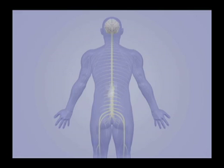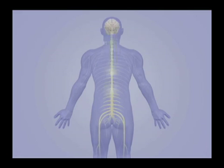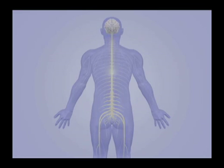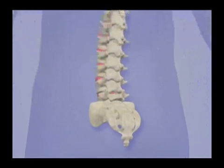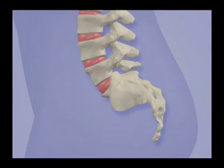Nerves carry messages to and from your brain. Some nerves control your muscles and others convey sensation like touch and pain. Surrounding the nerves are bones that support your body called vertebrae.